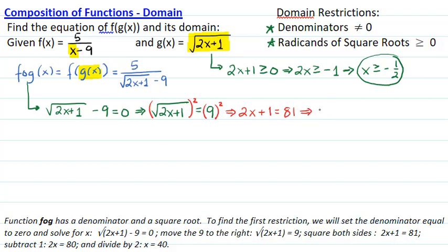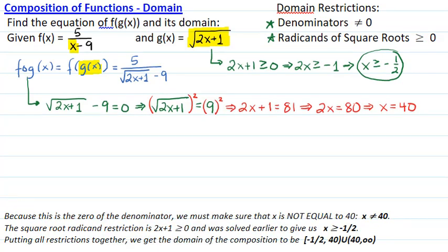We get 2x+1 = 81. Subtract 1, we get 2x = 80. Divide by 2, we get x = 40. Because this is the zero of the denominator, we must make sure that x doesn't take that value so that the denominator is not equal to 0. Therefore, x must be not equal to 40, and this is another restriction.